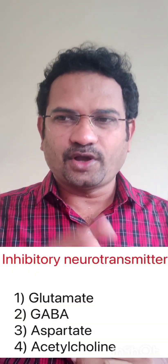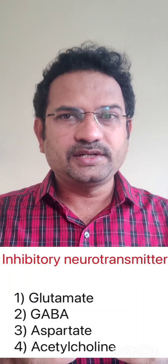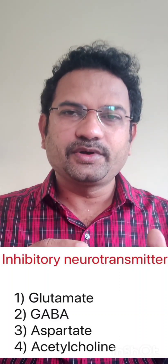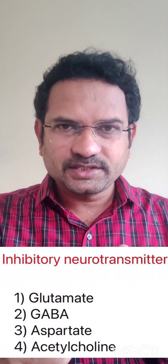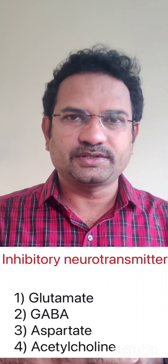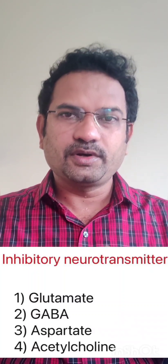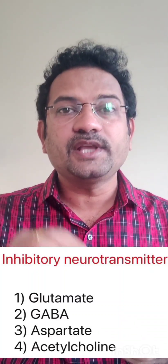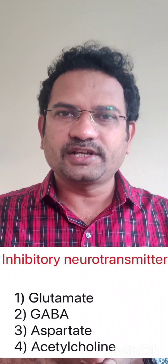Let us move on to the next question. Example of an inhibitory neurotransmitter — options are glutamate, GABA, aspartate, acetylcholine. As I explained, inhibitory neurotransmitters cause hyperpolarization. Among the four, GABA acts on chloride channels; chloride enters the cell, and since chloride has a negative charge, the negative potential further increases, causing hyperpolarization. So the answer is GABA. The remaining options — aspartate, glutamate, and acetylcholine — are all excitatory neurotransmitters causing excitatory postsynaptic potential. These are the questions about neurohumoral transmission. All the best.